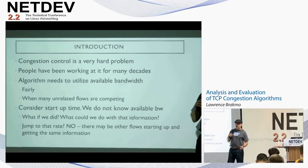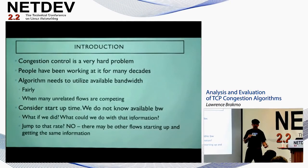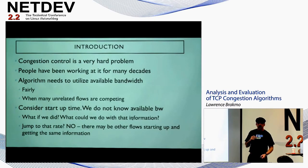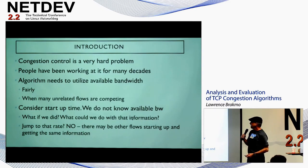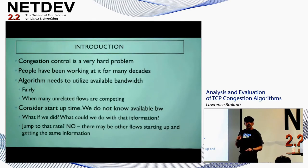Congestion control is a very hard problem. People have been working on it for decades, specifically in TCP starting in the 80s when Van Jacobson introduced the controls for slow start and the congestion window, up until last year and this year with Google and BBR. It is hard because the flows need to utilize the available bandwidth — which they do not know how much there is — in a fair way, when many unrelated flows are competing.